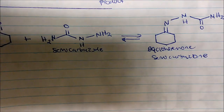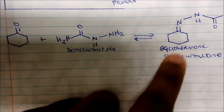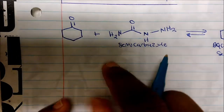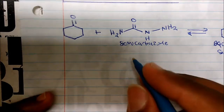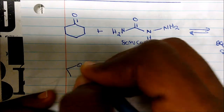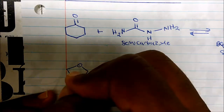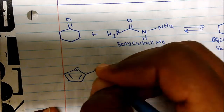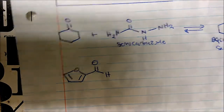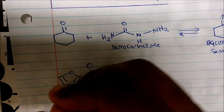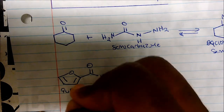So we form a semicarbazone. Now, what if you also took the same semicarbazide with furfural? Furfural looks something like this — it's a furan ring with an oxygen double-bonded. It has a carbonyl group with a hydrogen, so it has an aldehyde group.